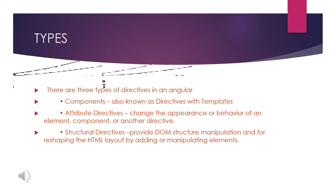Attribute directives are used as an attribute to any element. For example, we have an element like paragraph with id equal to one — here 'id' is the attribute name and 'one' is the attribute value. In the same manner, attribute directives add or change attributes to an element, changing the structure and behaviors of that particular element. It can also behave as an element, component, or another directive.